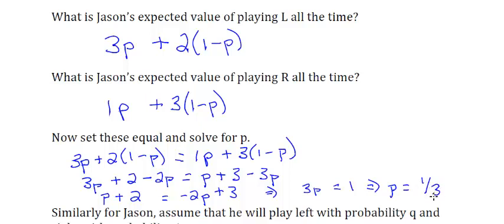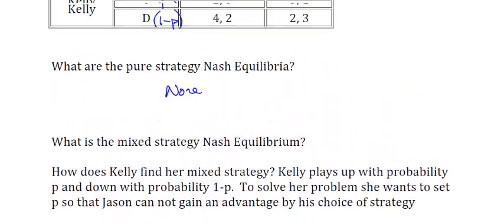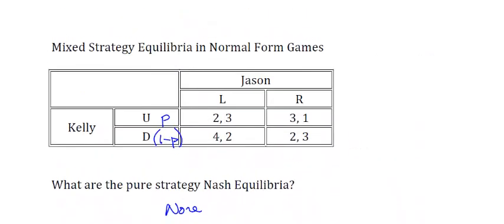So Kelly's strategy is to play up with probability 1/3 and down with probability 1 minus 1/3, which is 2/3.